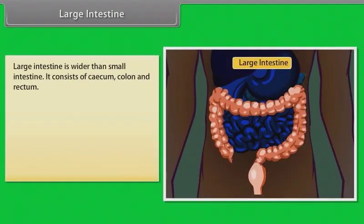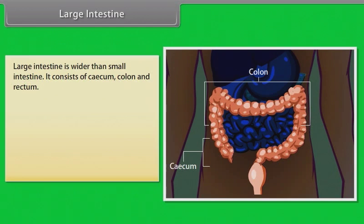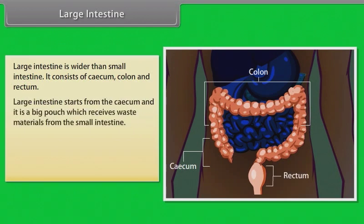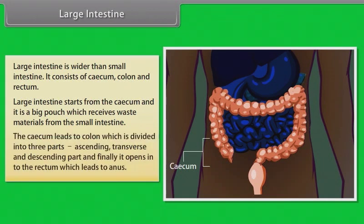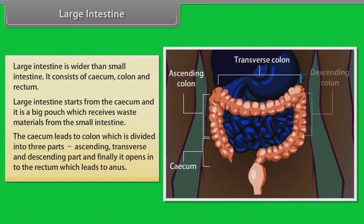The large intestine is wider than the small intestine and consists of the cecum, colon, and rectum. It starts from the cecum, a large pouch that receives waste materials from the small intestine. The cecum leads to the colon, which is divided into ascending, transverse, and descending parts, and finally opens into the rectum which leads to the anus.